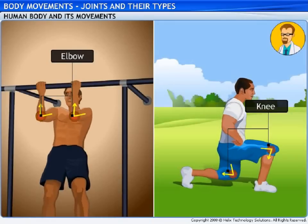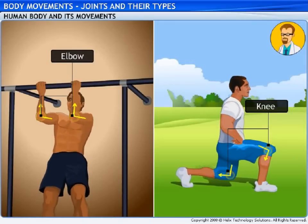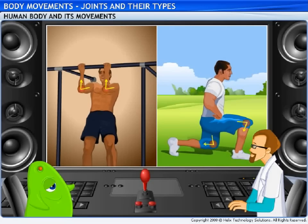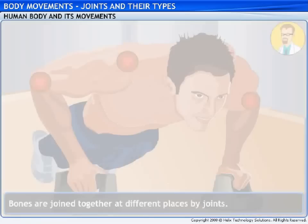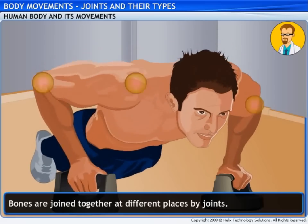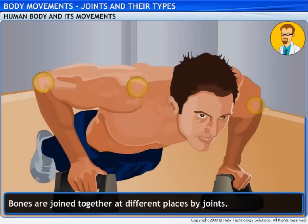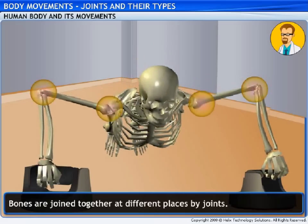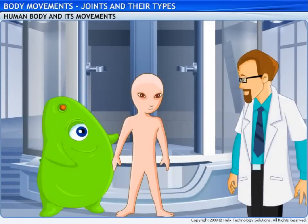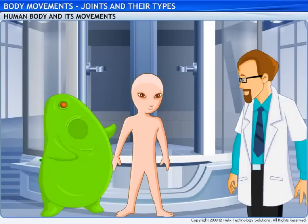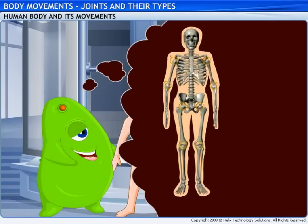Watch as he moves. Notice his arms bending at the elbow and legs bending at the knee. The human body contains several bones joined together at different places by joints. If you observe closely, we can bend or rotate our body parts only at those joints. Now I understand why our clones were not able to move as smoothly as you do. So what kind of joints do I need to create? Are all joints the same?